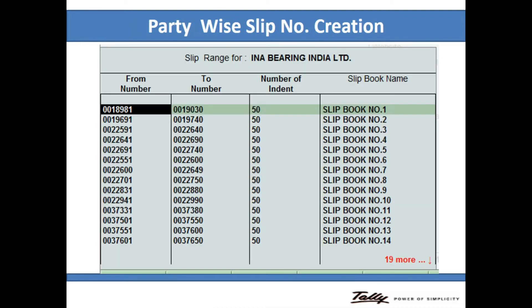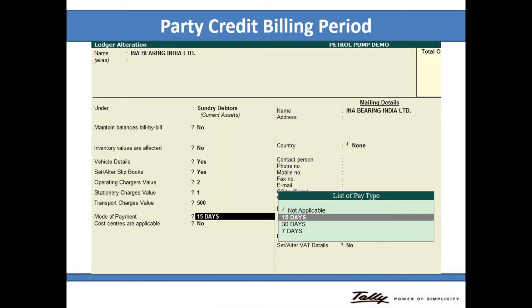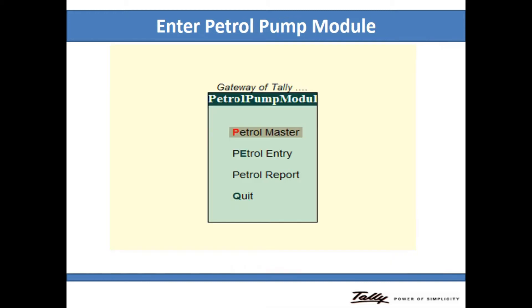The next one is party wise slip wise creation. You can easily set the slip number and automatically send it. And the next one is the party credit billing — you can easily create a desk set and automatically send the invoice for each party.